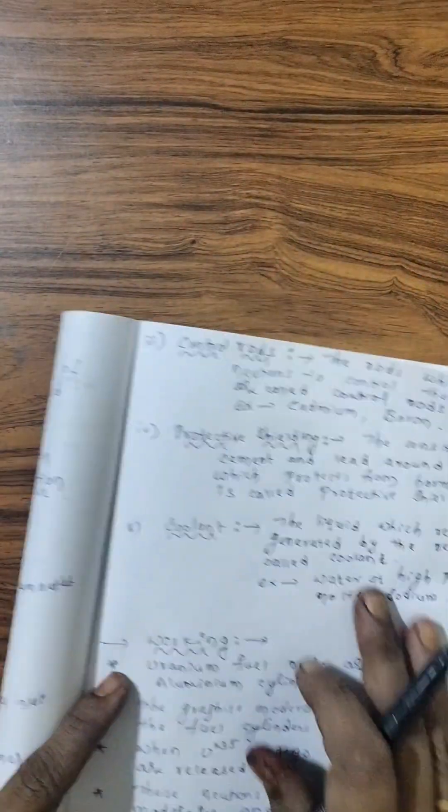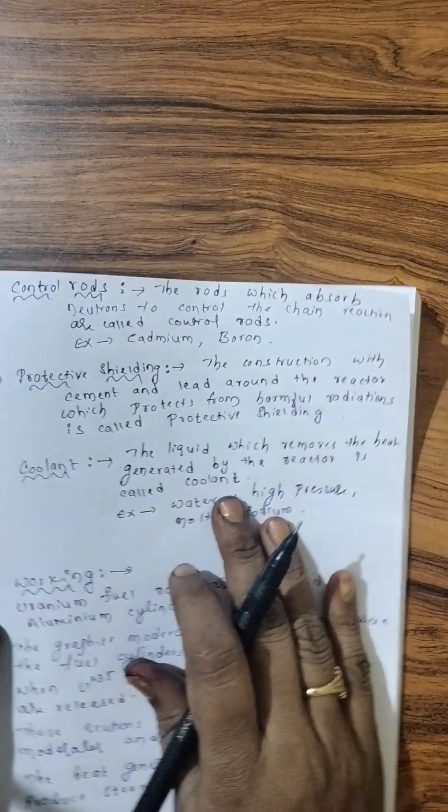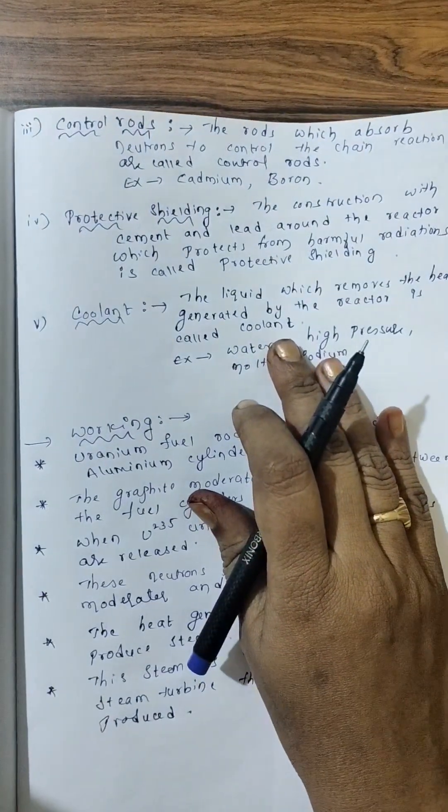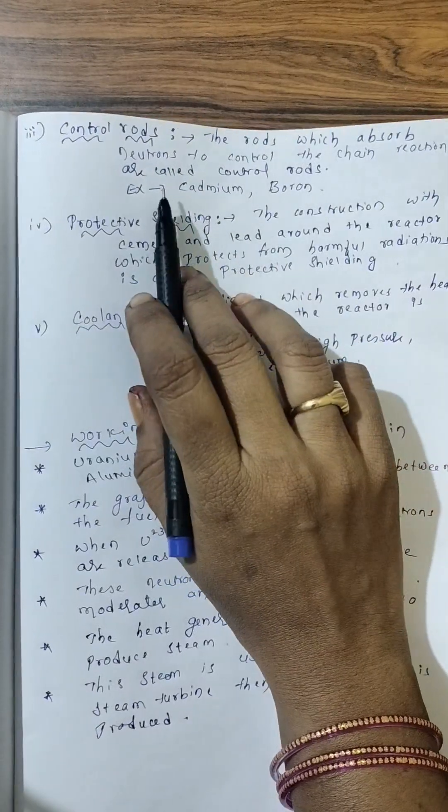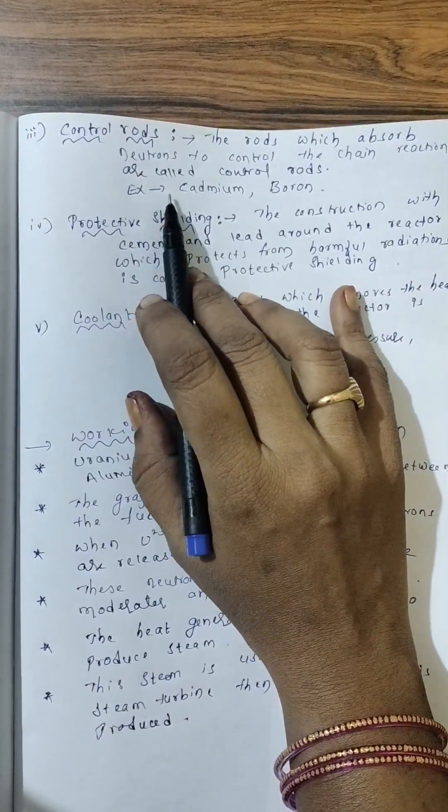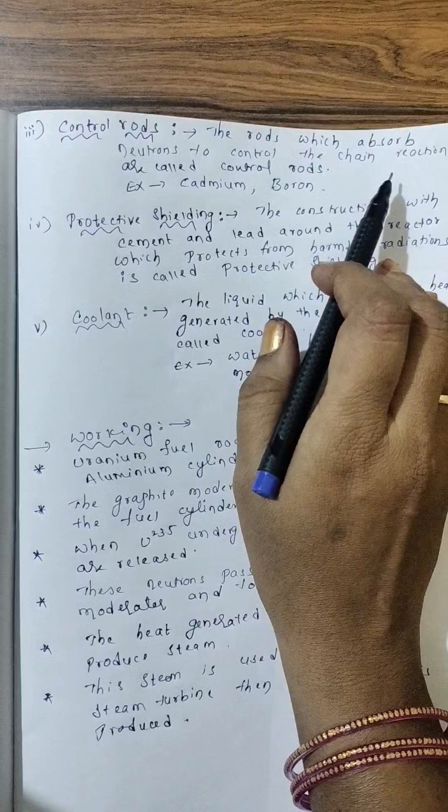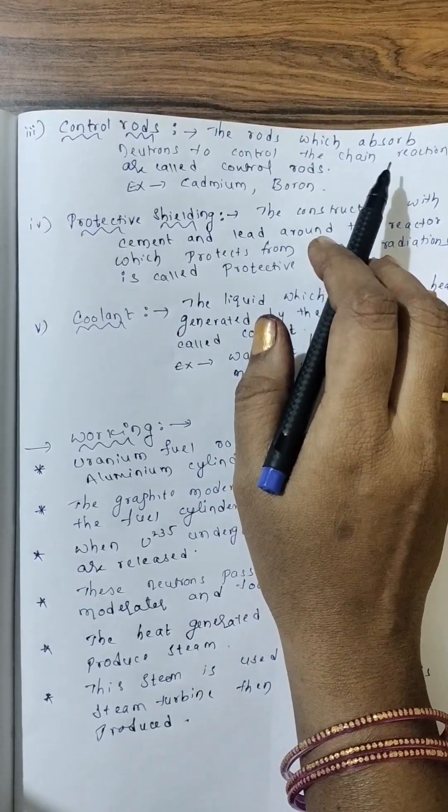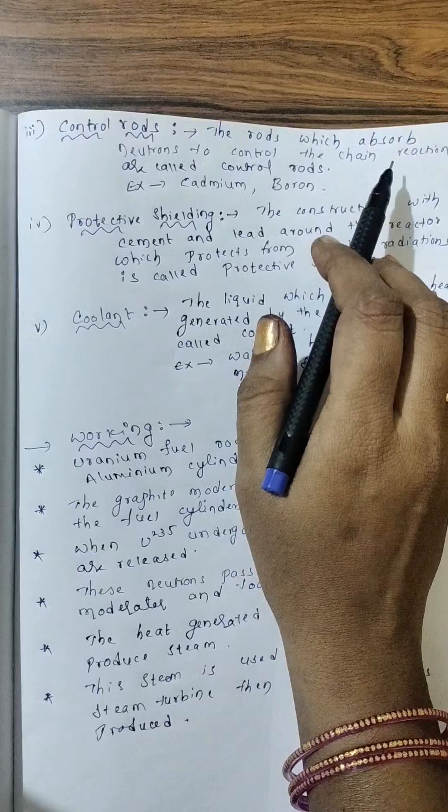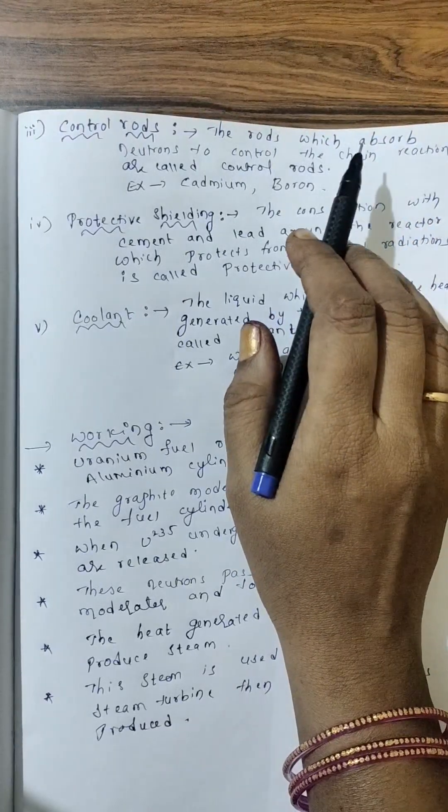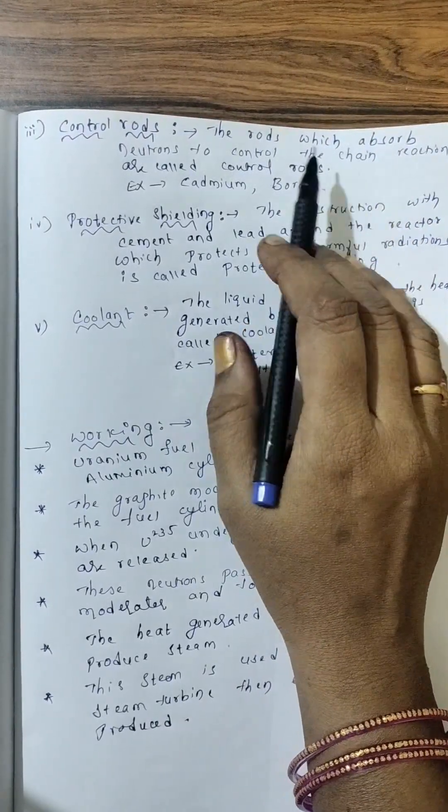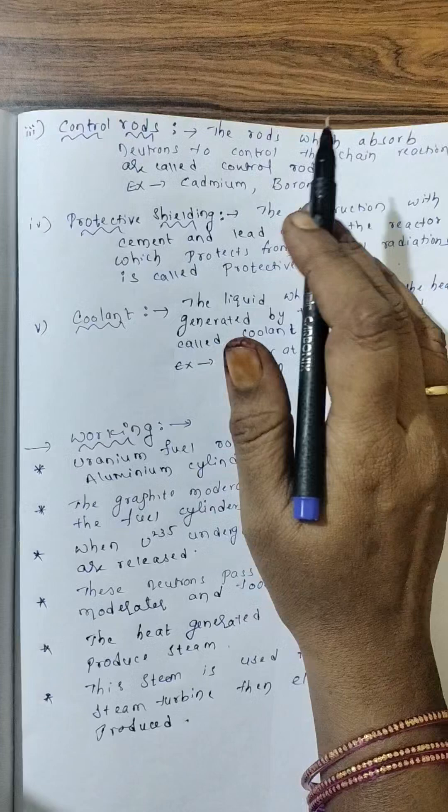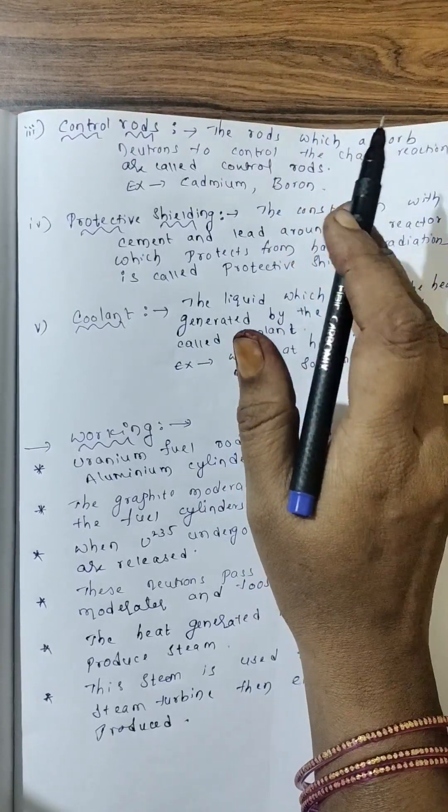Now next, control rods. So here, number of neutrons will be released in the fission process. It is a chain process. Now we have to control that chain process. So first, three neutrons will be released.